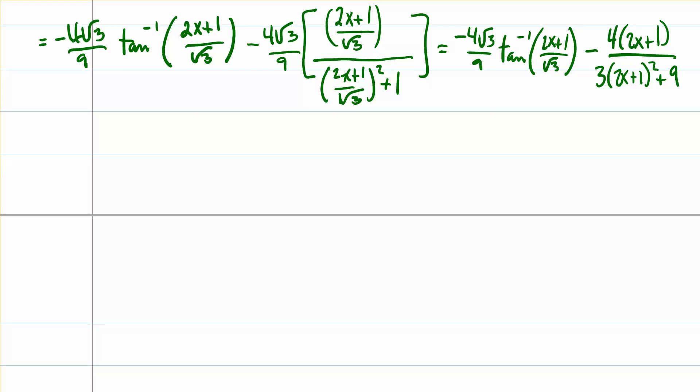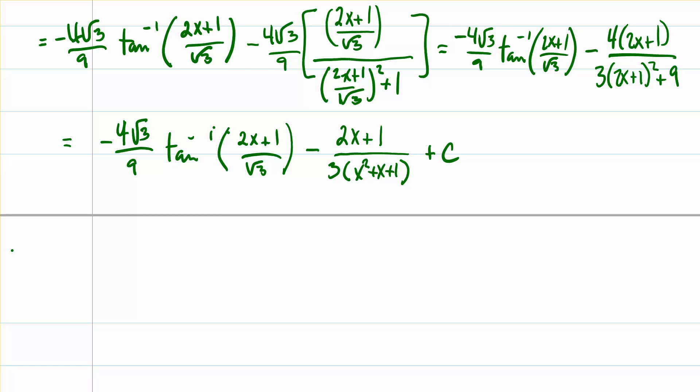So the first part — negative 4 root 3 over 9 times the inverse tangent of (2x + 1)/√3 — is pretty much all set. For the remaining fraction, multiplying everything out in the denominator gives 4x² + 4x + 1, then multiplying by 3 gives 12x² + 12x + 3, adding the 9 gives 12x² + 12x + 12 in the denominator. Factoring out the 12 and dividing gives the final simplified form. I'm going to stop this video here and pick it up in the next one, where we'll combine these integrals together.